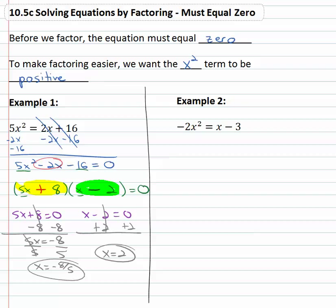Let's look at a second example. Here we have -2x² = x - 3. Well again, it doesn't equal zero, so we can't do anything yet.